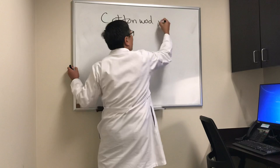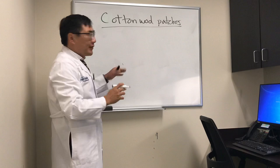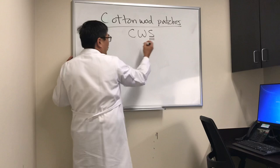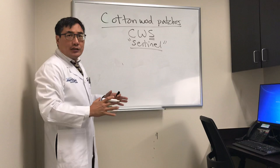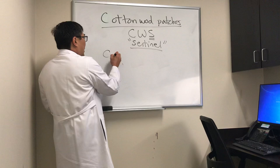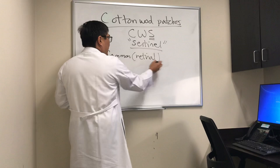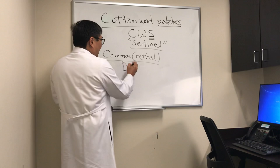Today we're talking about cotton wool patches in neuro-ophthalmology. I prefer what Dr. McLeod calls the cotton wool sentinel, because the word sentinel tells us there's something systemically wrong with any patient who has a cotton wool patch. A cotton wool patch is really a sentinel of systemic disorder. The common ones are the retinal etiologies, which I'll cover so the differential is complete.